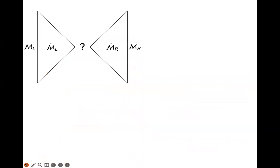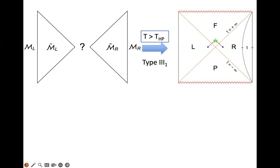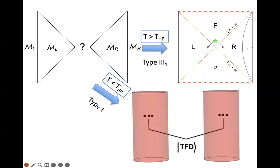Above the Hawking-Page transition, we have this Type III₁ structure and we essentially recover the causal structure of the Schwarzschild spacetime, including the signature of the horizon and the finer structure of the light cone. Below the Hawking-Page transition, you still have standard Type I algebra, and in that case you have two disconnected geometries. Type III₁ is responsible for the emergence of the Rindler structure near the horizon. If you're below the Hawking-Page, with Type I there cannot be such a Rindler structure, and you only have the disconnected spacetime. This is a more precise way to talk about whether the spacetimes are connected, versus ER=EPR.